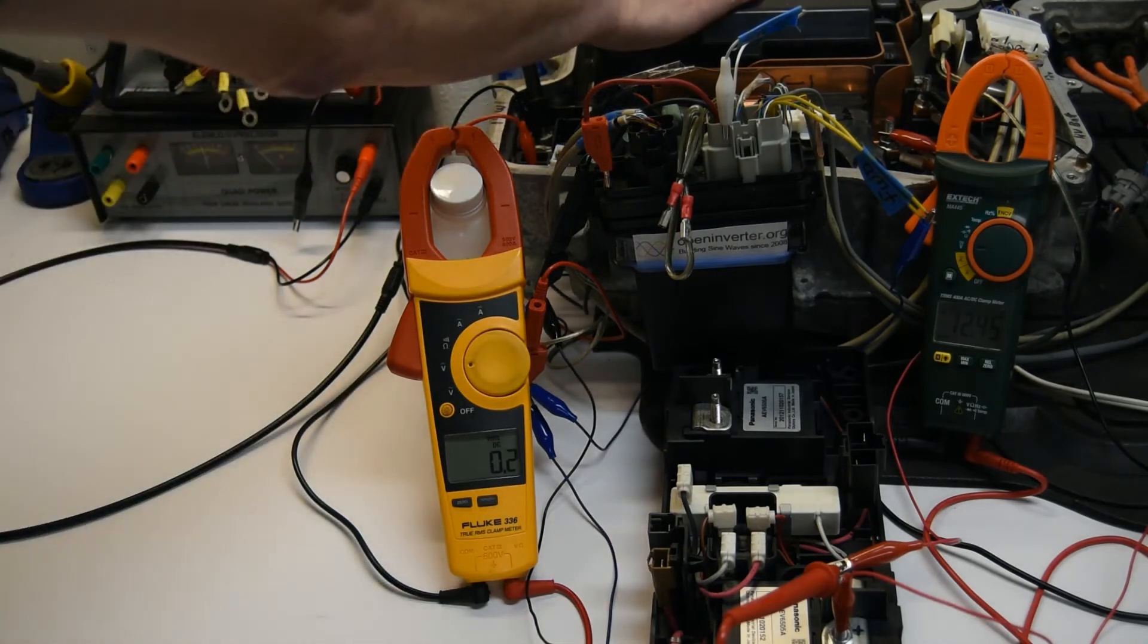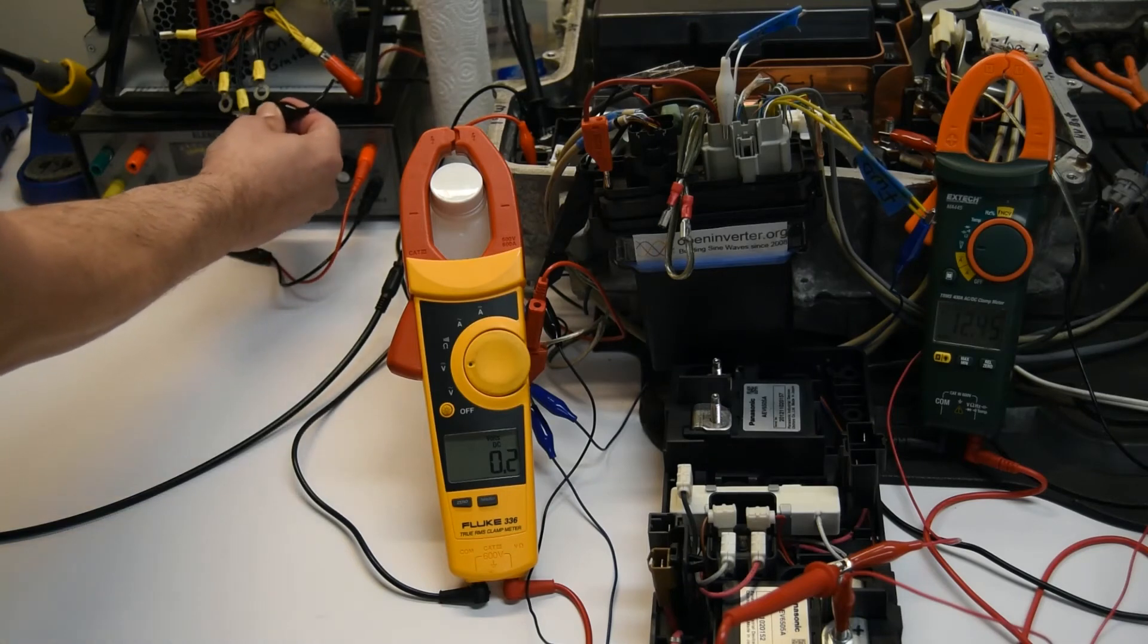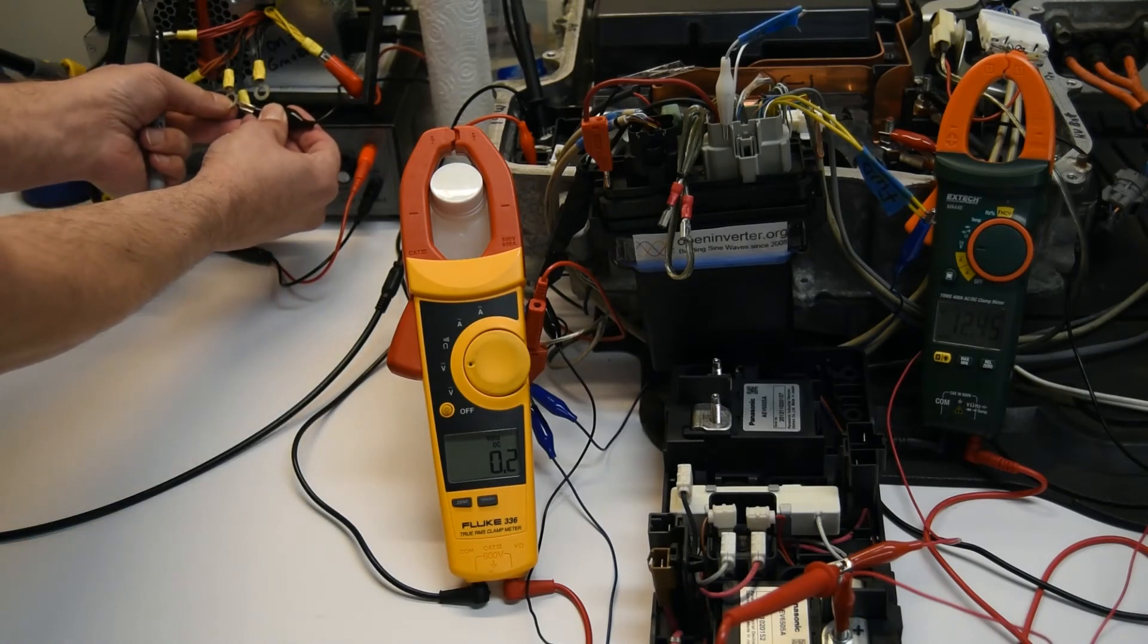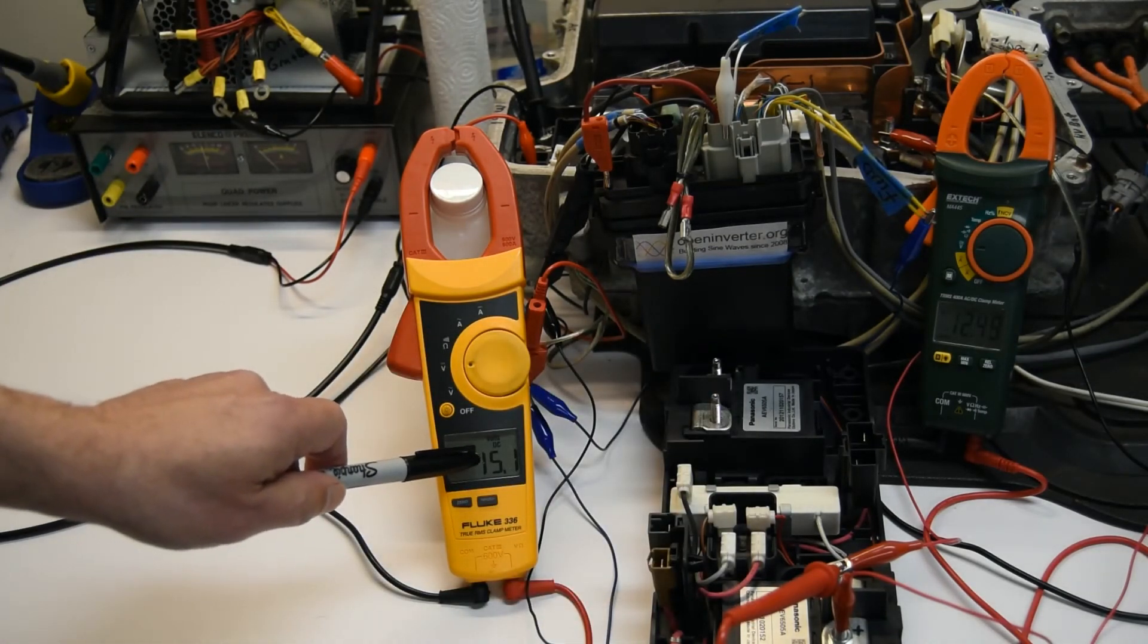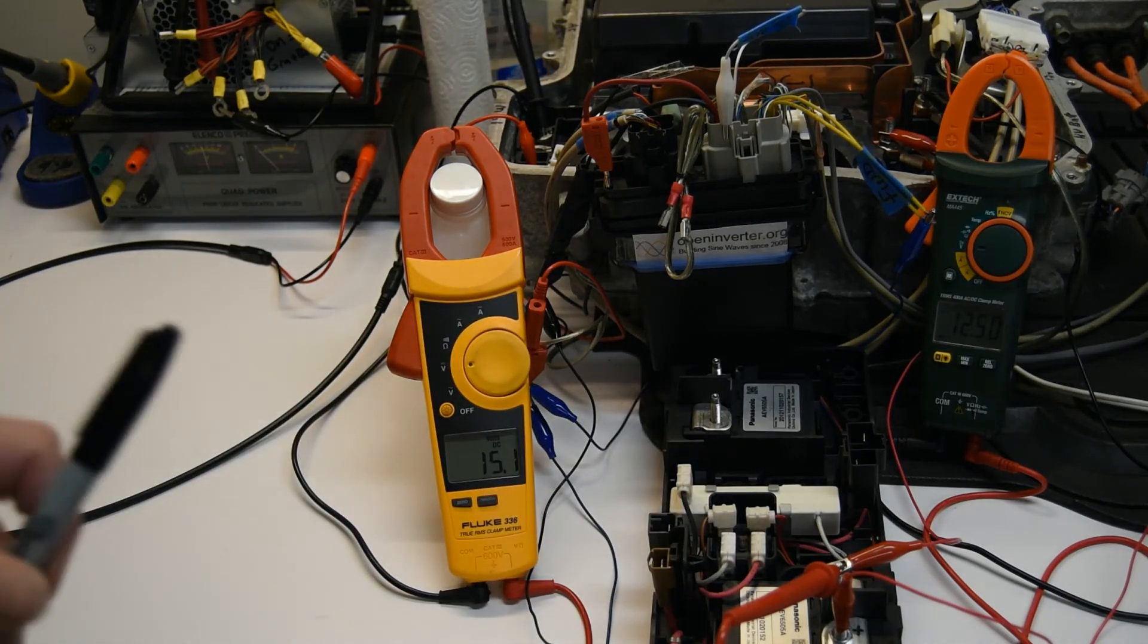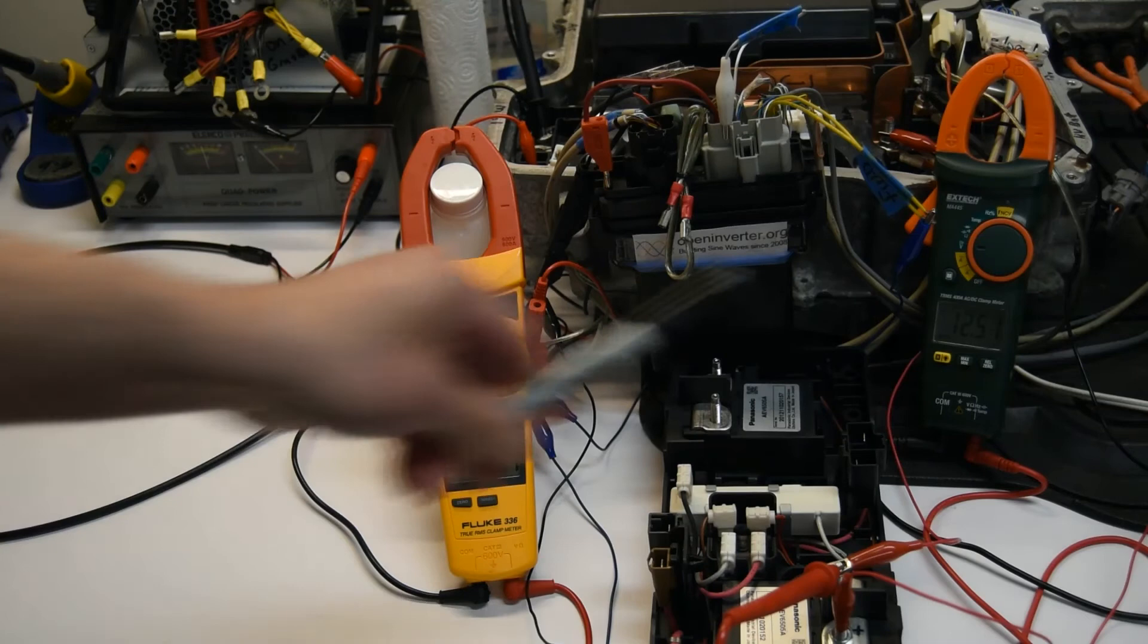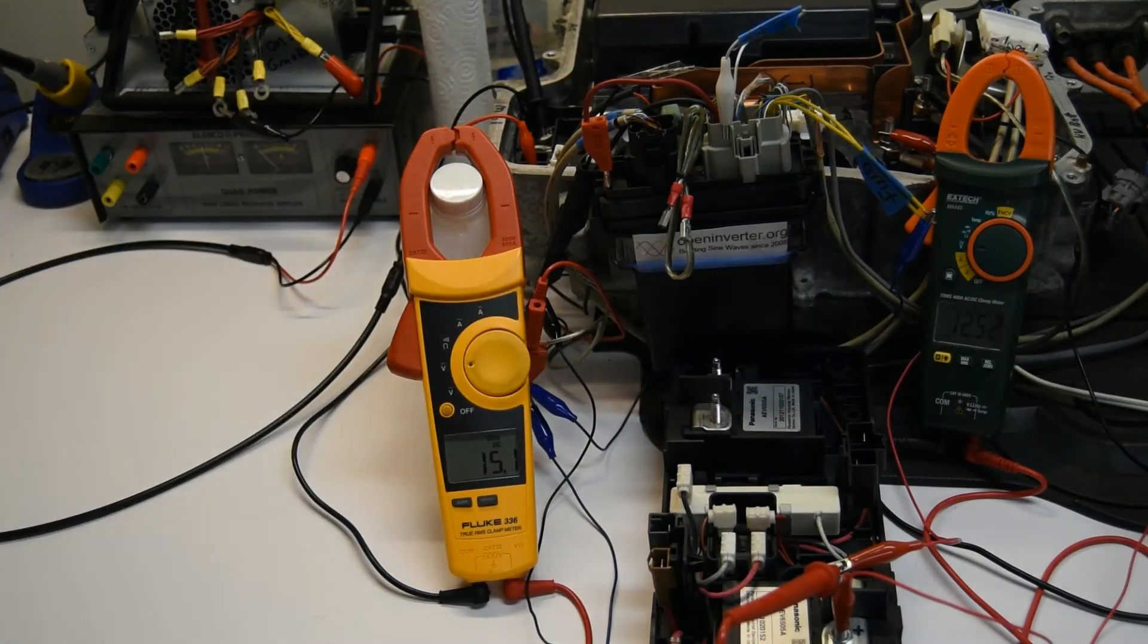I'm going to power up only the inverter converter and see if I get power through. You heard the little relay click—that's my pre-charge relay. So you can see I'm applying 15.1 volts across here now, and I am getting some battery charging.